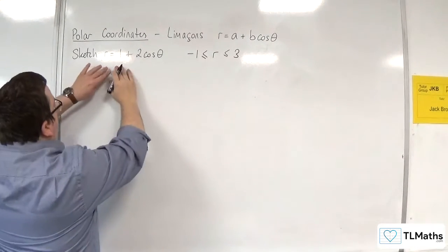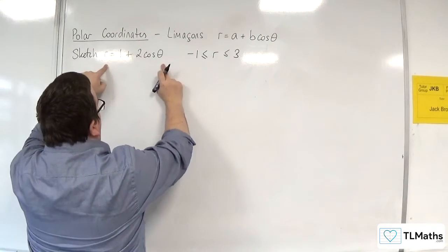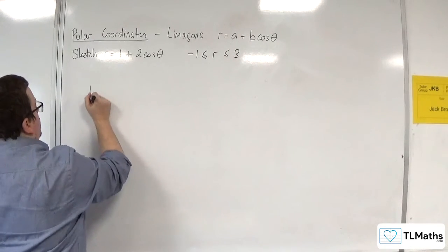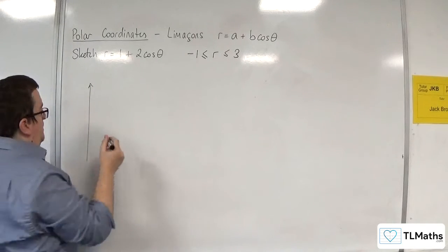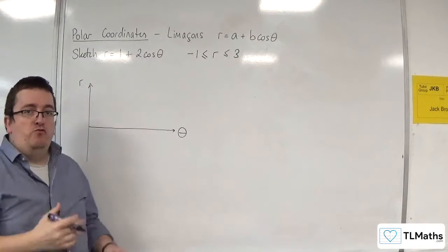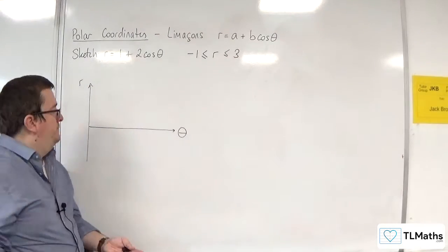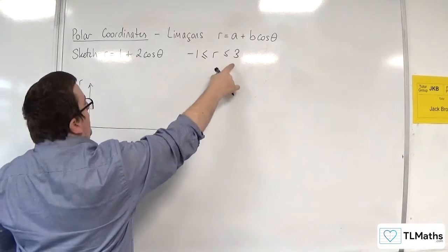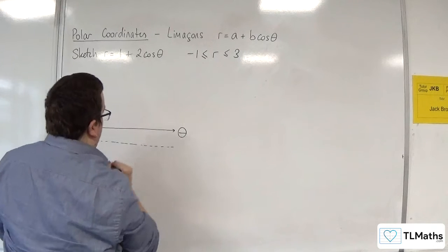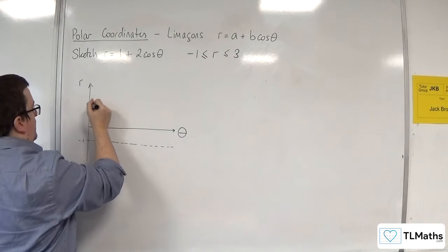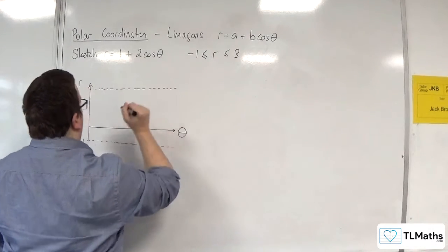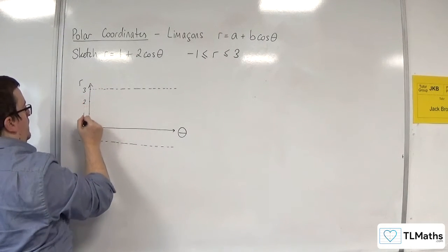So what I'm going to do is I'm not going to sketch this in a polar sense yet. The first thing I'm going to do is I'm going to sketch it theta against r. So as if it's just a regular Cartesian curve. So I know that it's got to go between minus 1 and 3. So minus 1. Let's put that in. Then we've got 1, 2, 3.